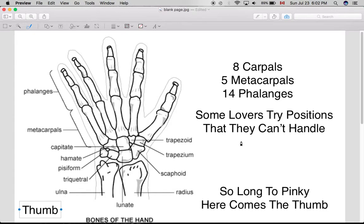But this doesn't really tell you where the bones are. I guess you could memorize that they're in a specific order. But I like this one better. So long to pinky, here comes the thumb. Because it actually tells you the order of the wrist bones a little better.